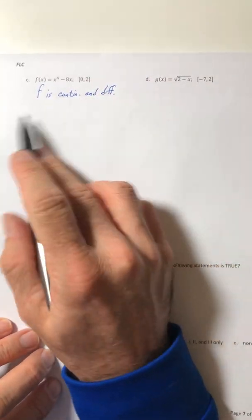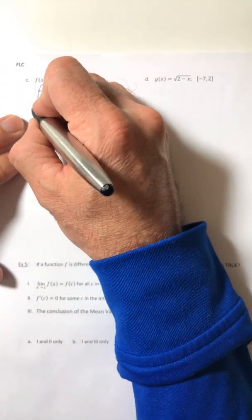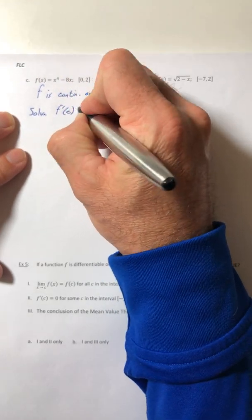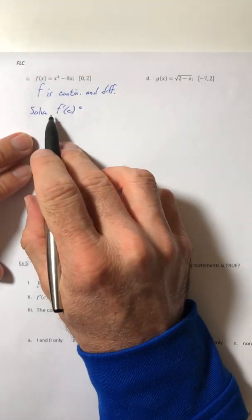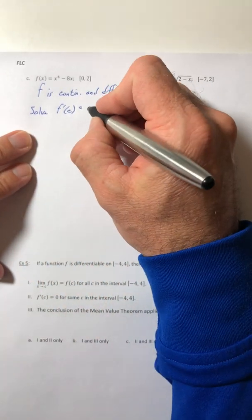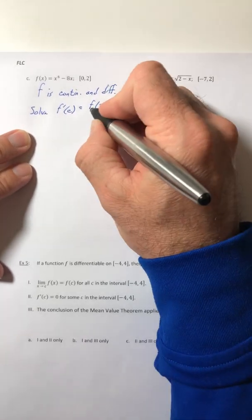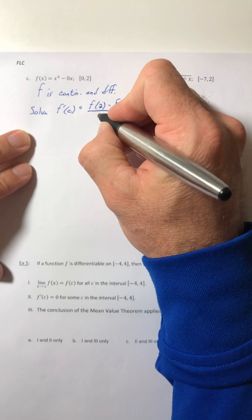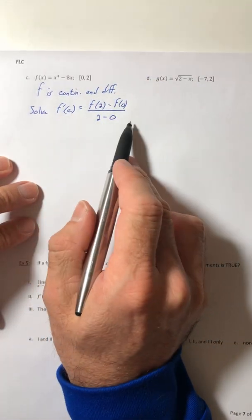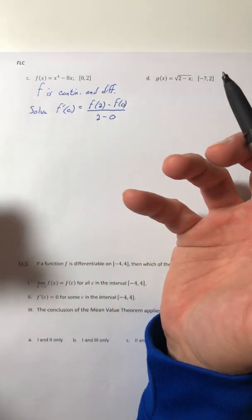Alright, so that's all you have to check. There's no f of a equals f of b. So now you have to solve what the theorem guarantees. So the theorem guarantees, or says to solve, the derivative is equal to f of b minus f of a over b minus a.